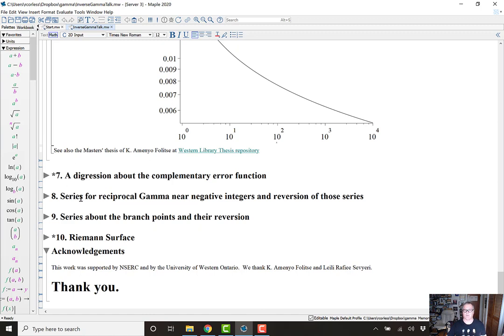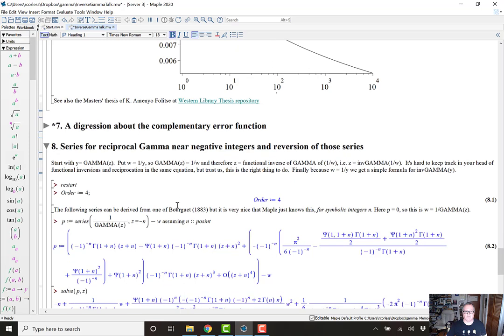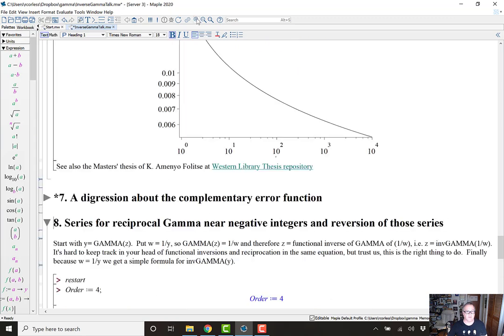So now what about the other branches? How do we deal with the other branches? Well, one thing is to look at the series for the reciprocal gamma near negative integers and revert those series. And those will give us a bunch of approximations valid near the poles. Well, the flipped over poles, the horizontal poles of the reciprocal, the functional inverse of gamma. So it's hard to keep track of reciprocals and functional inverse in the same thing, but trust us, this actually works very nicely. This works as well as we can. Maybe I can increase the size of this a little bit.